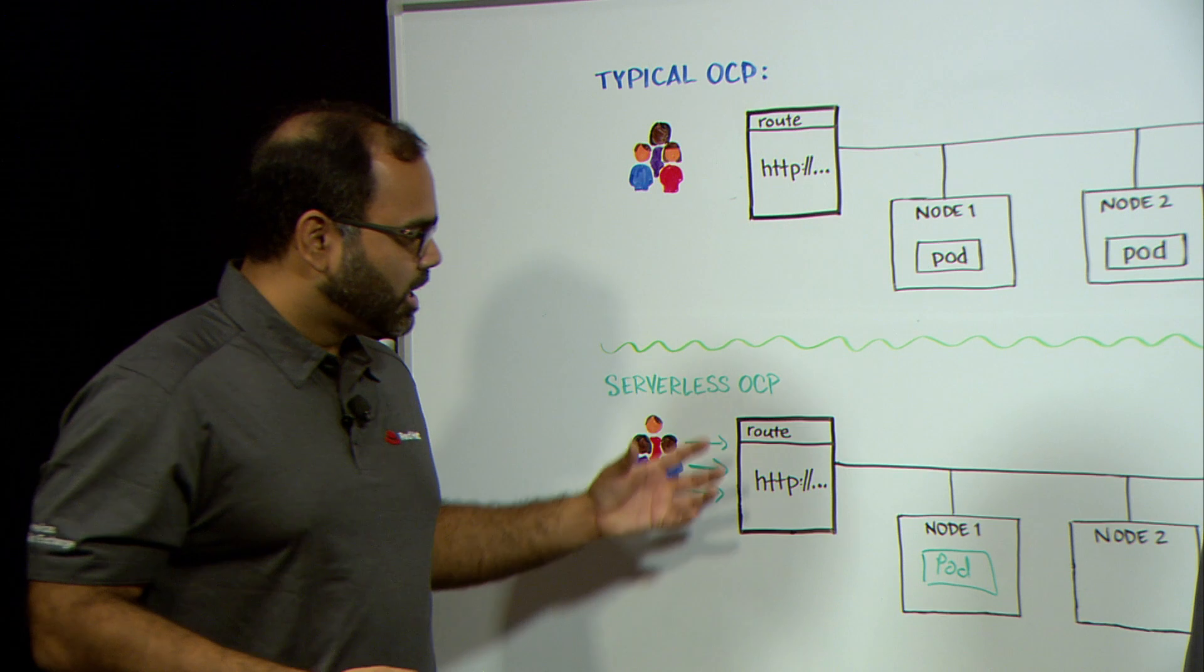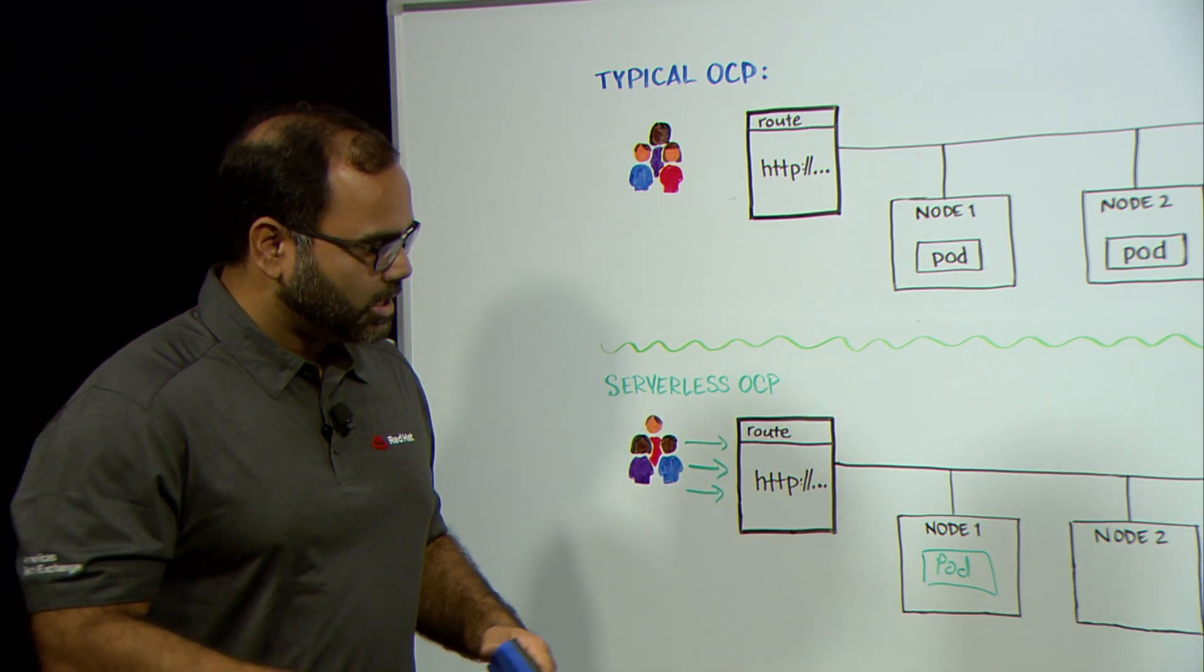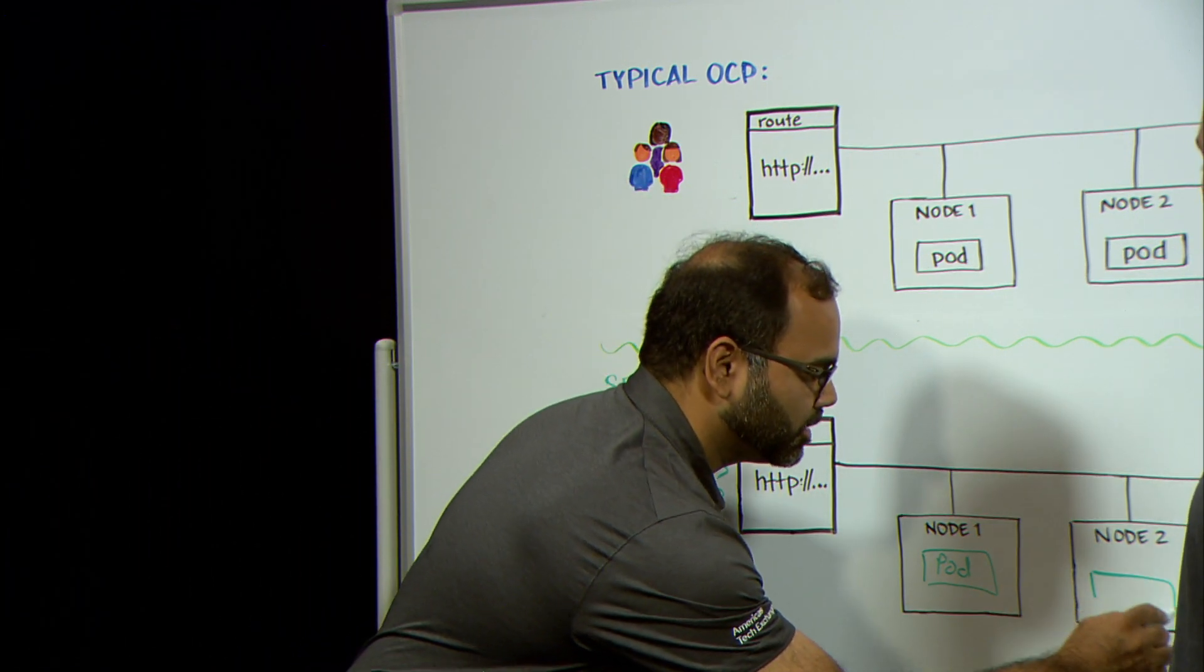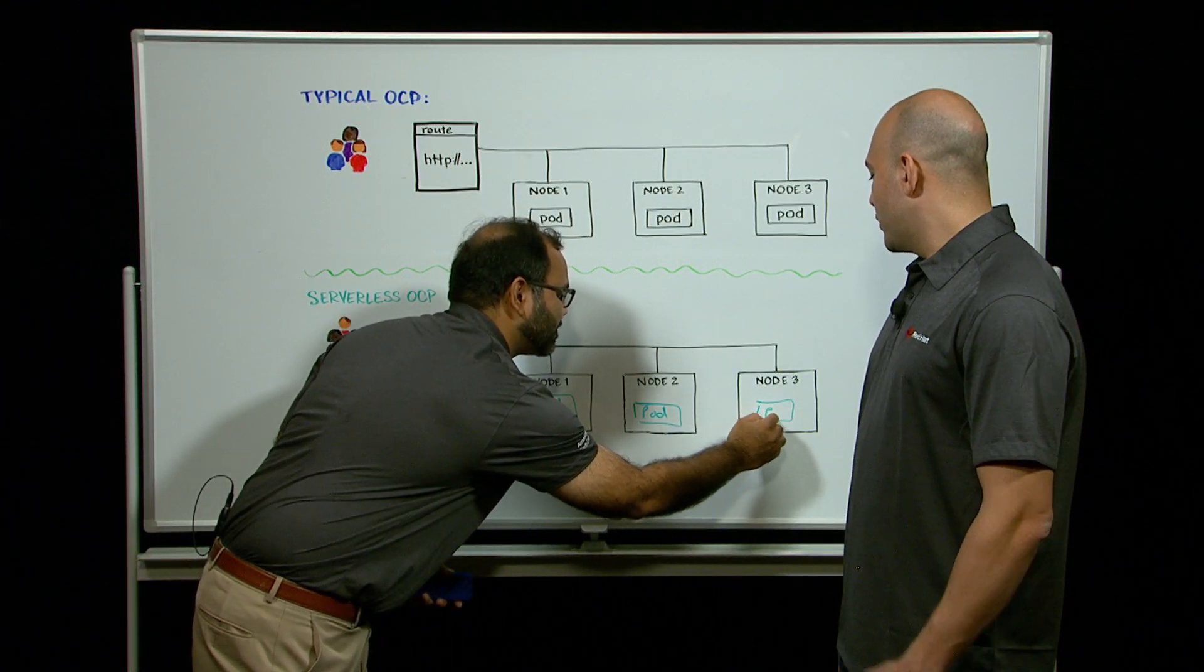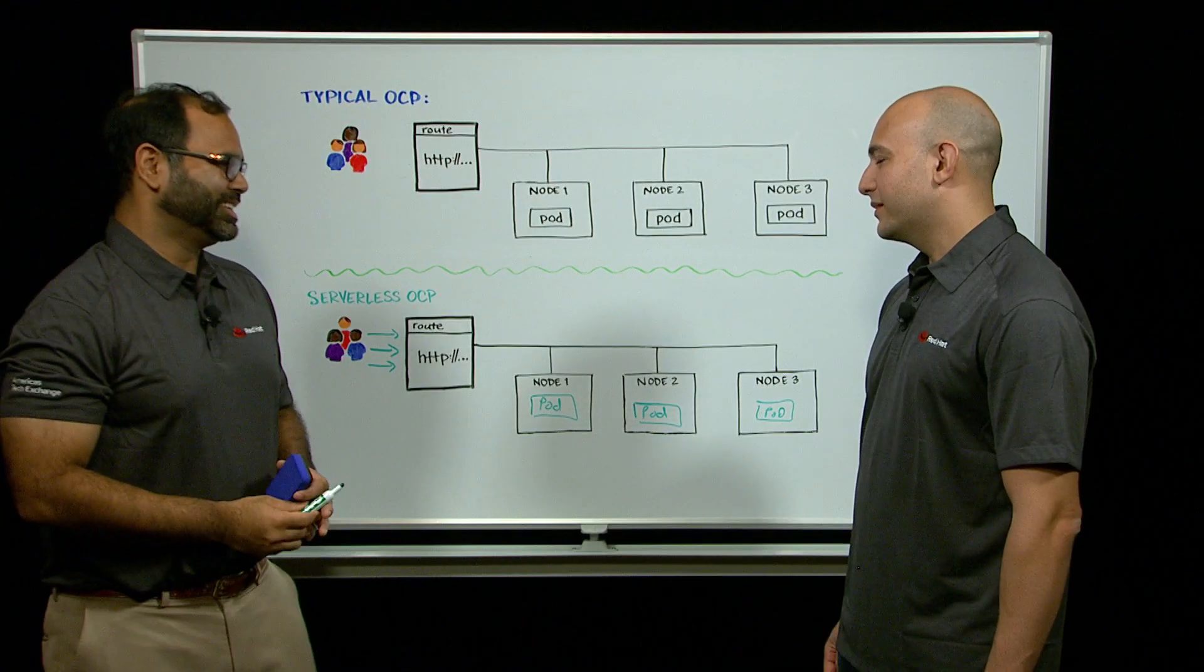OpenShift can detect, oh, there's a lot of requests now queued up. This pod is getting overwhelmed. It'll start spawning more pods to serve this new load of traffic. OpenShift auto-scales it. Absolutely. That's great.